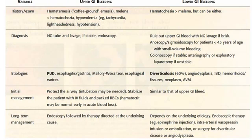Let's review upper GI bleeding versus lower GI bleeding — history of the patient and exam. In the case of upper GI bleeding, the patient has hematemesis; they will vomit blood. Coffee ground emesis — blood will look like coffee grounds in the case of upper GI bleed.